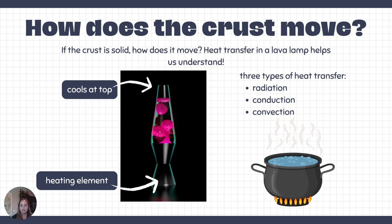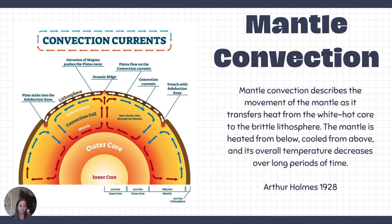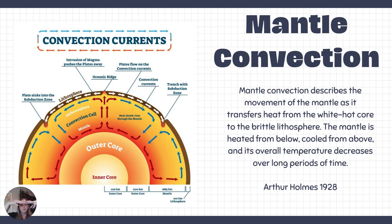When we look at the mantle, we learned from Arthur Holmes that there are convection currents — called mantle convection. This is a theory coined by Arthur Holmes in 1928, and it describes the movement of the mantle as it transfers heat from the hot core to the cold crust. Looking at these convective cells, as they're closer to the outer core they're warmer, and as they go up to the crust they cool down. If these convective cells move toward or away from each other, they can start to move the crust at the top — that's how the actual crust can move.